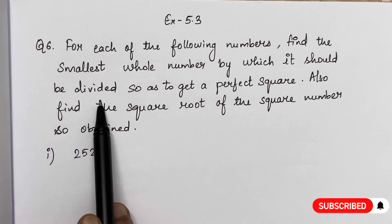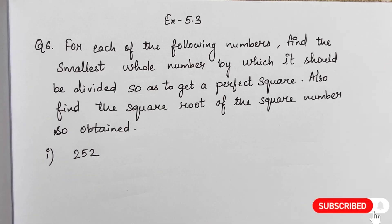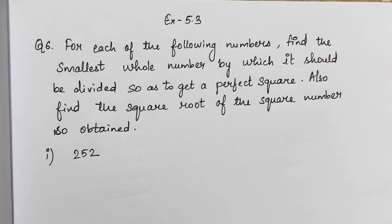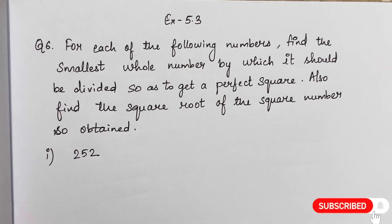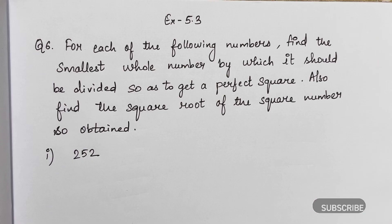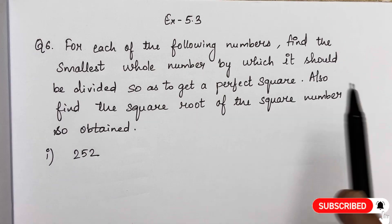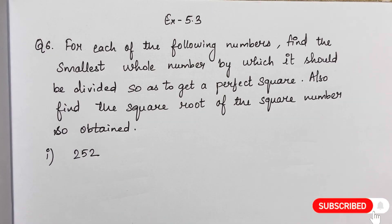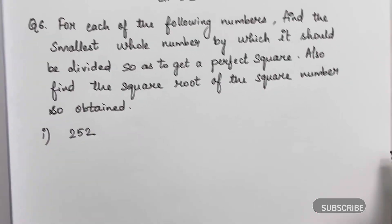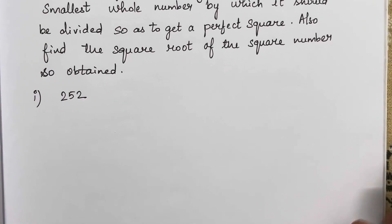In the last question we multiplied the number and got a perfect square, but in this it is a reverse case — we have to divide that number. Then we have to find the square root and the square number also. So look at Question 1: 252.